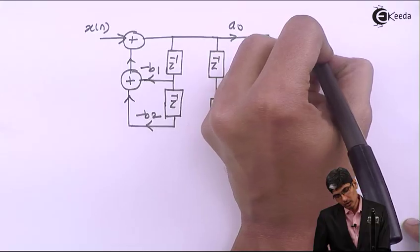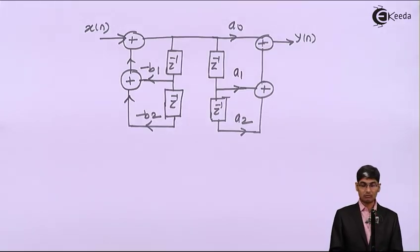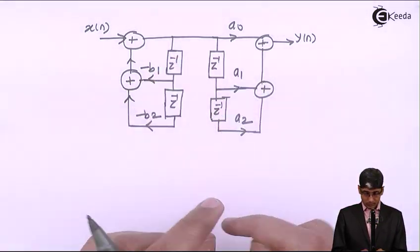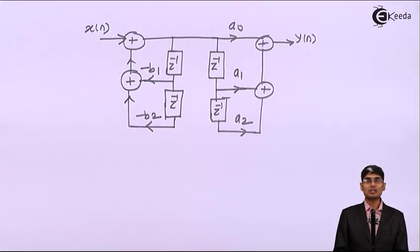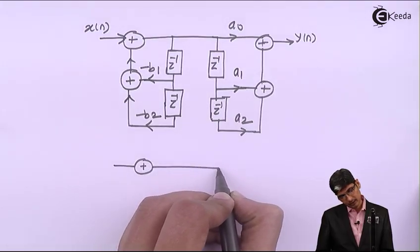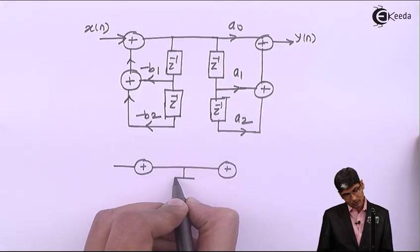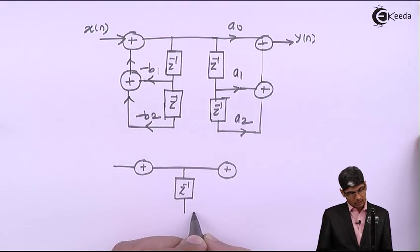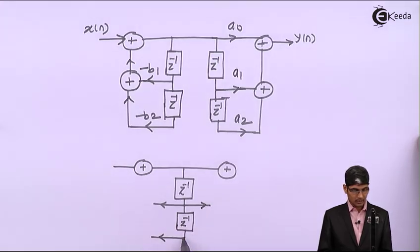We have just swapped the places of the Direct Form 1 structure and obtained Direct Form 2. Now, as you can see, there are four Z-inverse blocks right next to each other. We will combine them and make only one string of Z-inverses. When combined, we get two positive adders — one from each side — and there will be only one string: a first Z-inverse and a second Z-inverse. One line from each Z-inverse goes back and the other goes ahead.